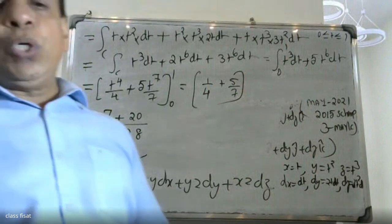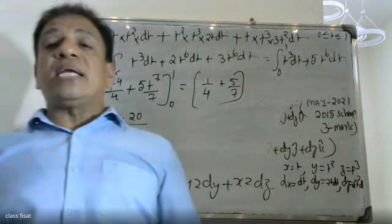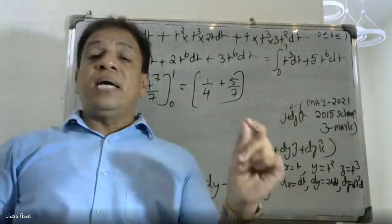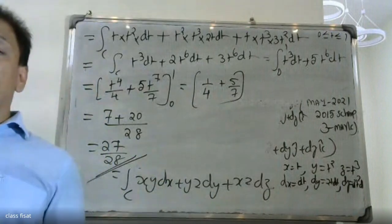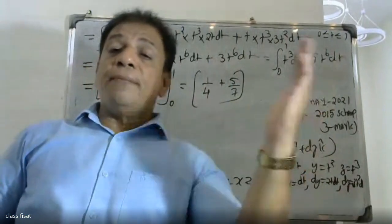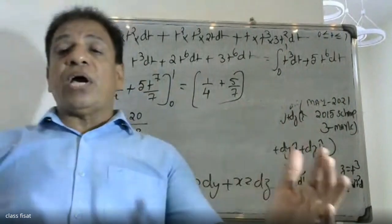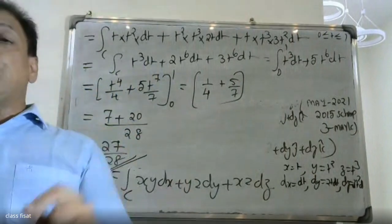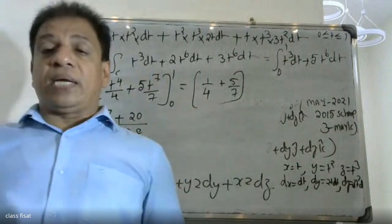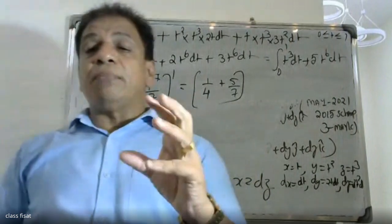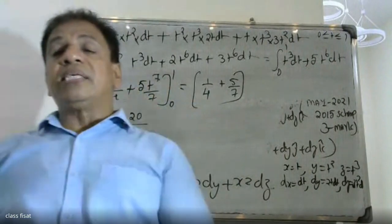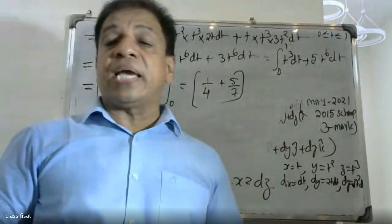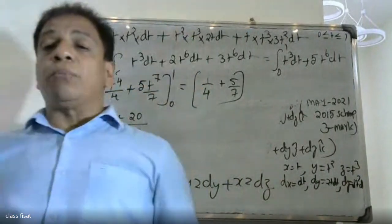So the answer is 27/28 using the formula integral over C of F dot dr. Remember to identify dx, dy, dz from the parametrization, then substitute the variable values to get your answer.